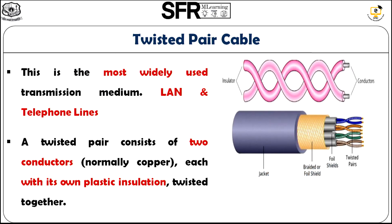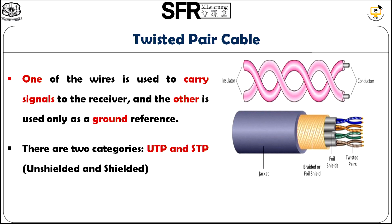Let us look deeply at twisted pair cable first. Twisted pair cable is the most commonly used transmission medium and is majorly used to connect LAN and telephone lines. As seen in the diagram, a twisted pair consists of two conductors — normally copper wires — shielded with their own plastic insulation and twisted together. One wire is used for carrying signals and the other wire is used for ground reference.